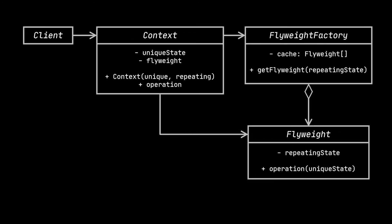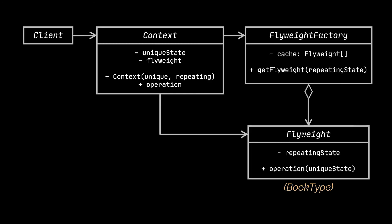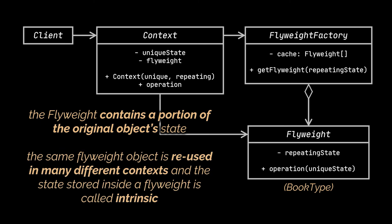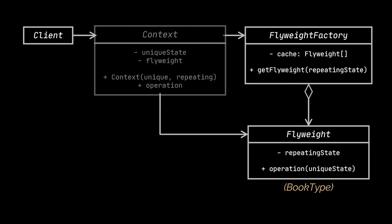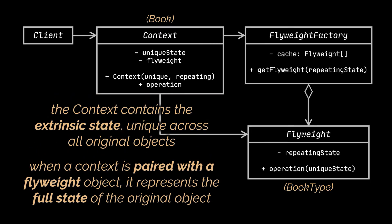While relating the class diagram to the books example we just implemented — the first thing you will notice is the flyweight class, which was the BookType class in our example. This class contains a portion of the original object's state that can be shared between multiple objects. The same flyweight object is reused in many different contexts, and the state stored inside a flyweight is called intrinsic. Next is the context class, which was the Book class in our example — it contains the extrinsic state unique across all original objects.